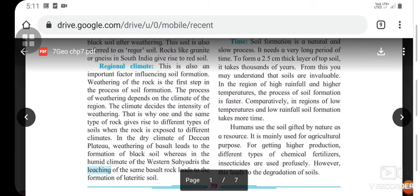Second factor is regional climate. This is also an important factor influencing soil formation. Weathering of the rock is the first step in the soil formation process. The climate decides the intensity of weathering. That is why one and the same type of rock gives rise to different types of soils when exposed to different climates.